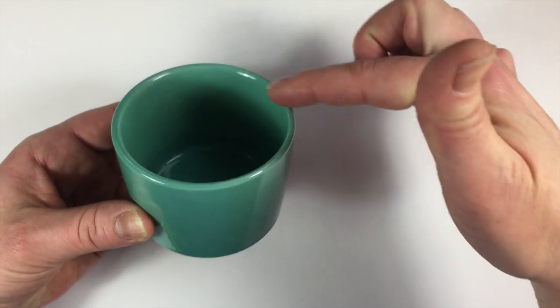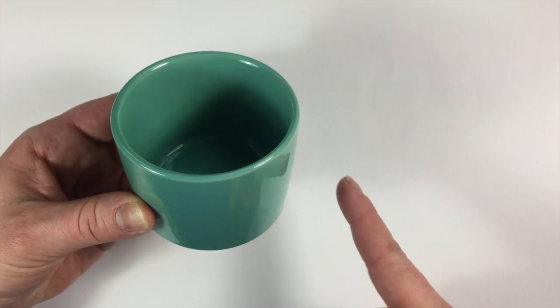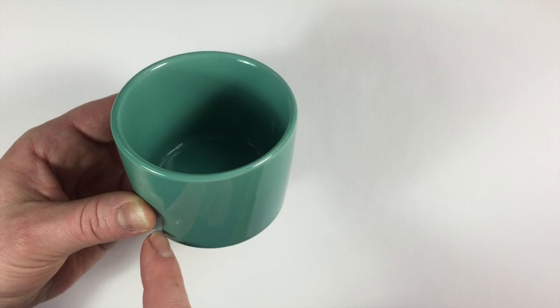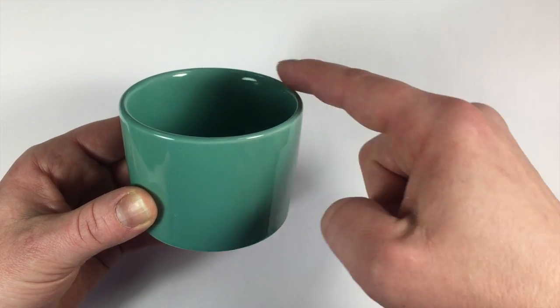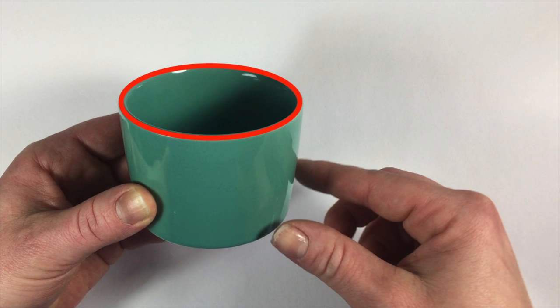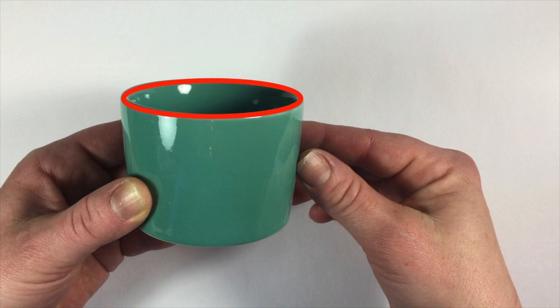Do you see how this top now looks like an oval? And we see two sides that come down from that oval and a curved bottom. If we turn it more, that oval becomes a flatter oval. If we turn it more, it becomes an even flatter oval.